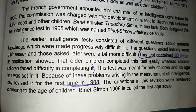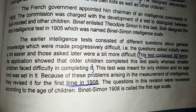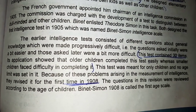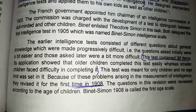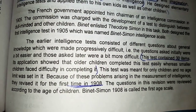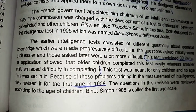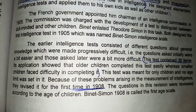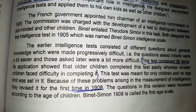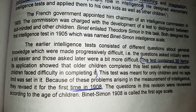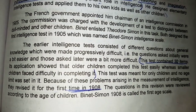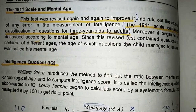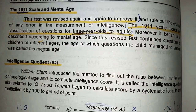The Binet-Simon scale is also called the first age scale, in which they introduced the concepts of mental age and chronological age. The Binet-Simon scale relates exclusively to verbal language and reading abilities.